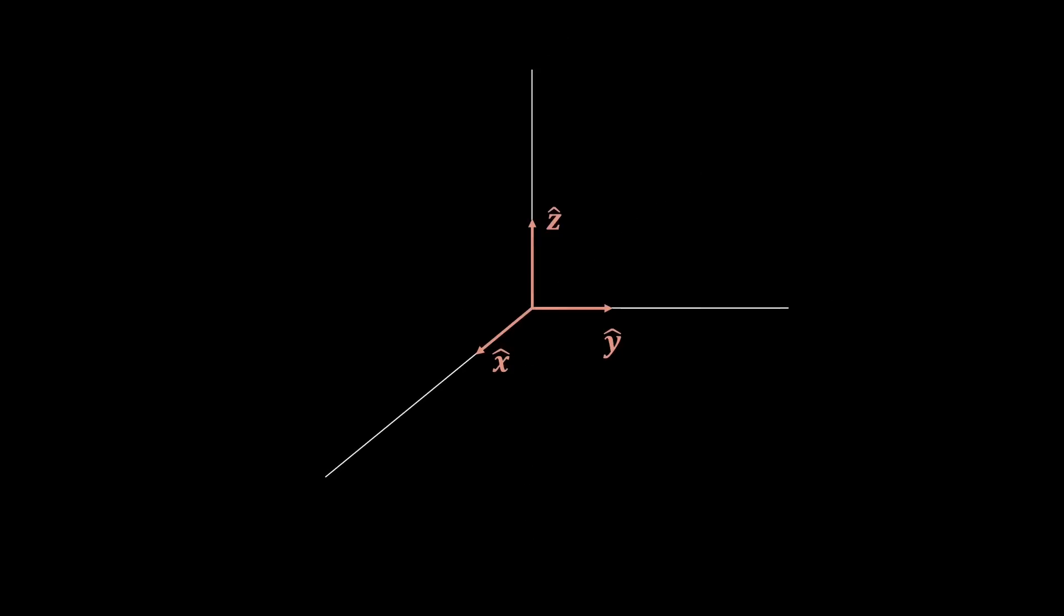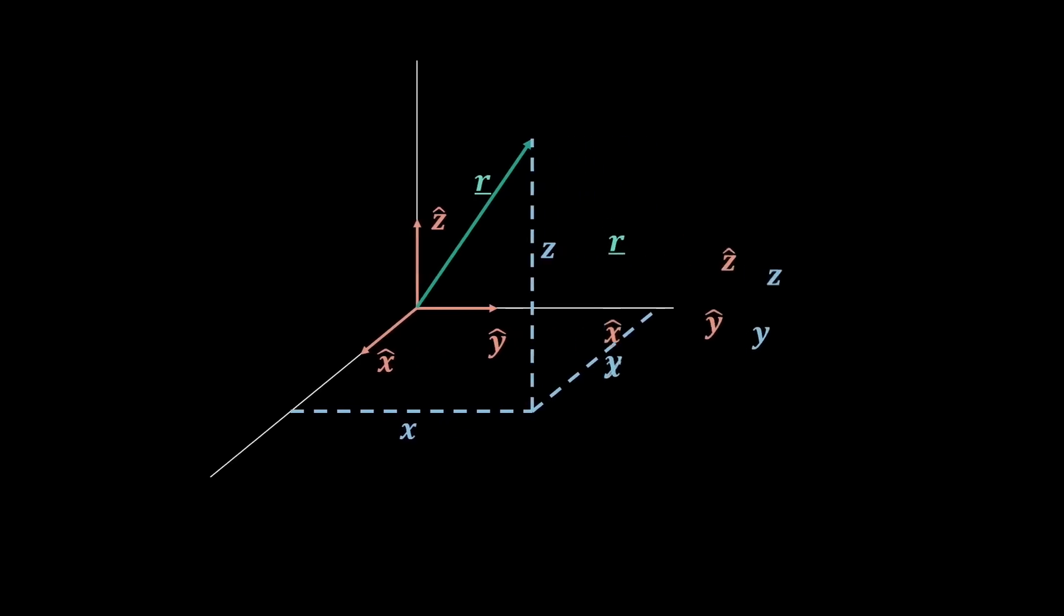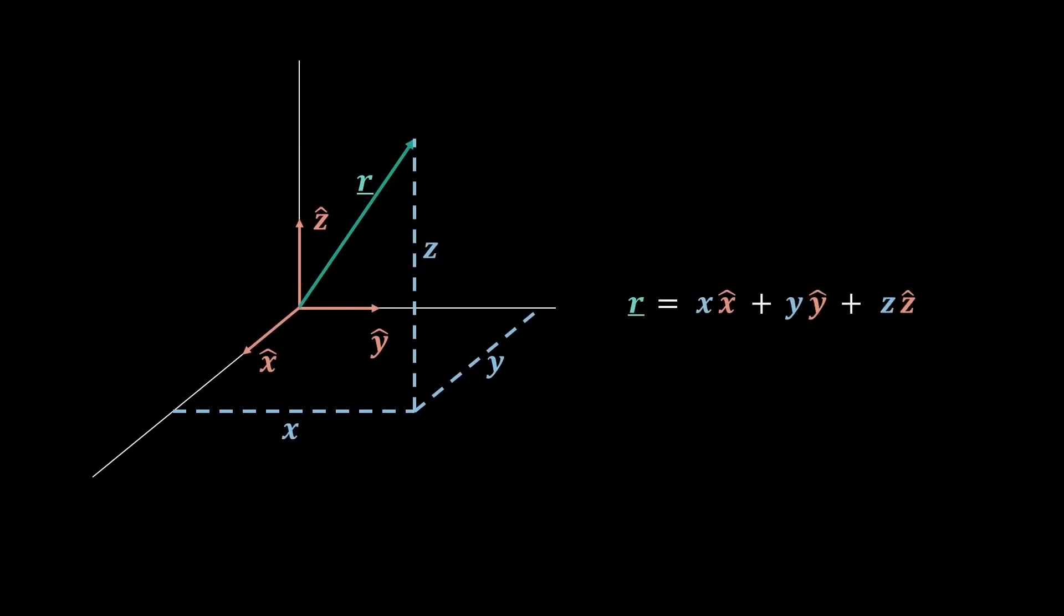So talking about a general vector here, say R, then we say that R is made up of x, y and z components, where R is x on the x-hat direction, y on the y-hat direction and z in the z-hat direction.